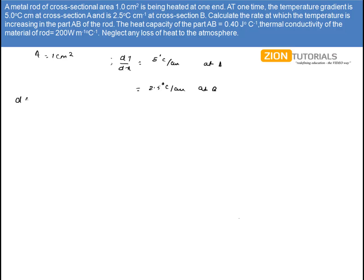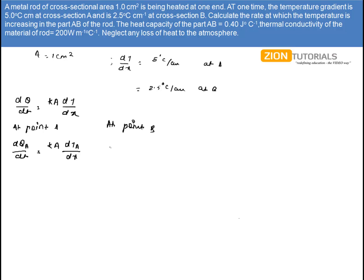We know that dQ/dt is given by K·A·(dT/dx). So at point A, dQ_A/dt equals K·A·(dT_A/dx), and at point B, dQ_B/dt equals K·A·(dT_B/dx). Due to this temperature gradient, there is a temperature increase in part AB of the rod.